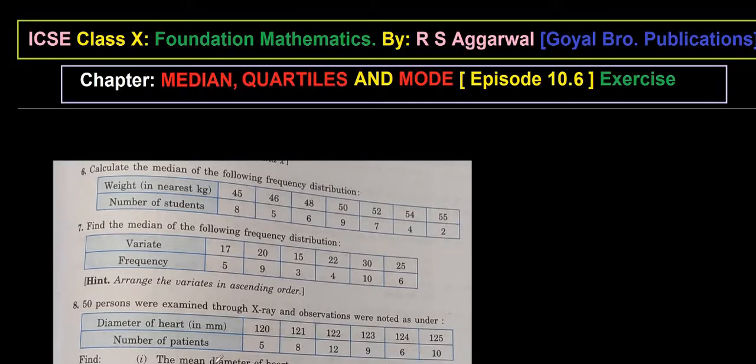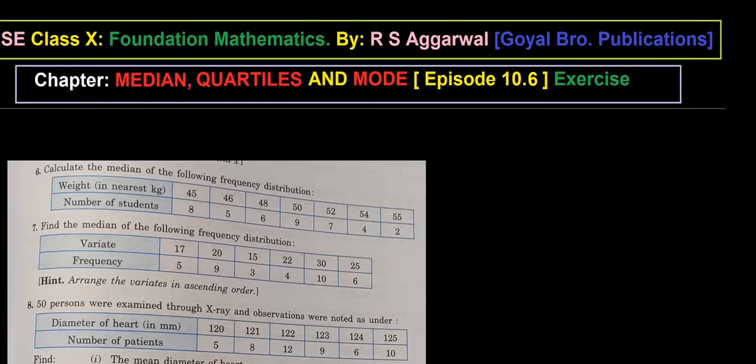Hello viewers, welcome to ICSC Class 10 Foundation Mathematics by RS Agrawal, Goel Brothers Publications. We are with Chapter: Measures of Central Tendency and we are solving sums from Exercise 26A. We are with median, quartiles, and more. We are with sum number 6, and I am going to represent sum numbers 6 to 10, but I am going to do only sum number 6 and sum number 10, as 7, 8, and 9 are similar.